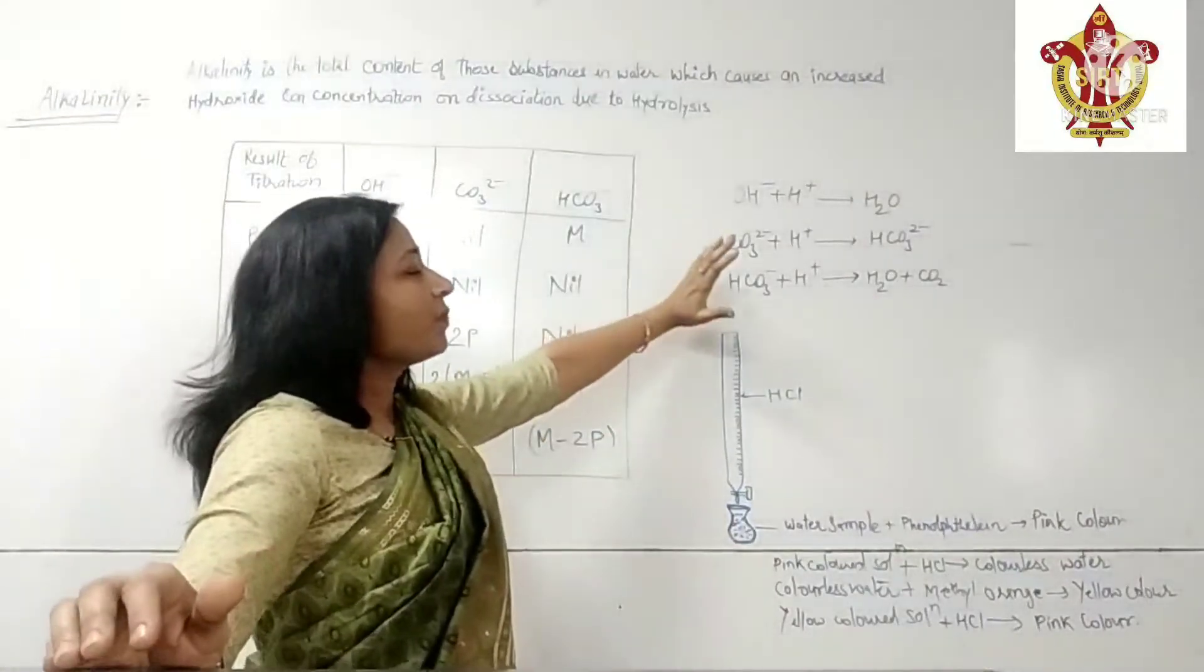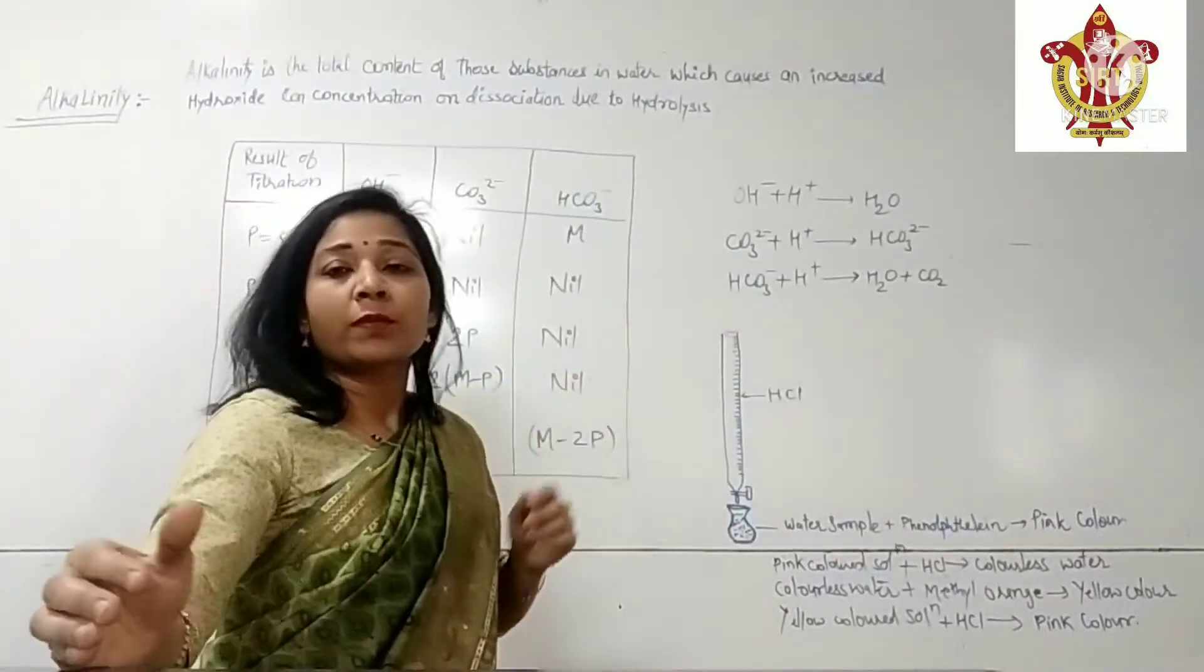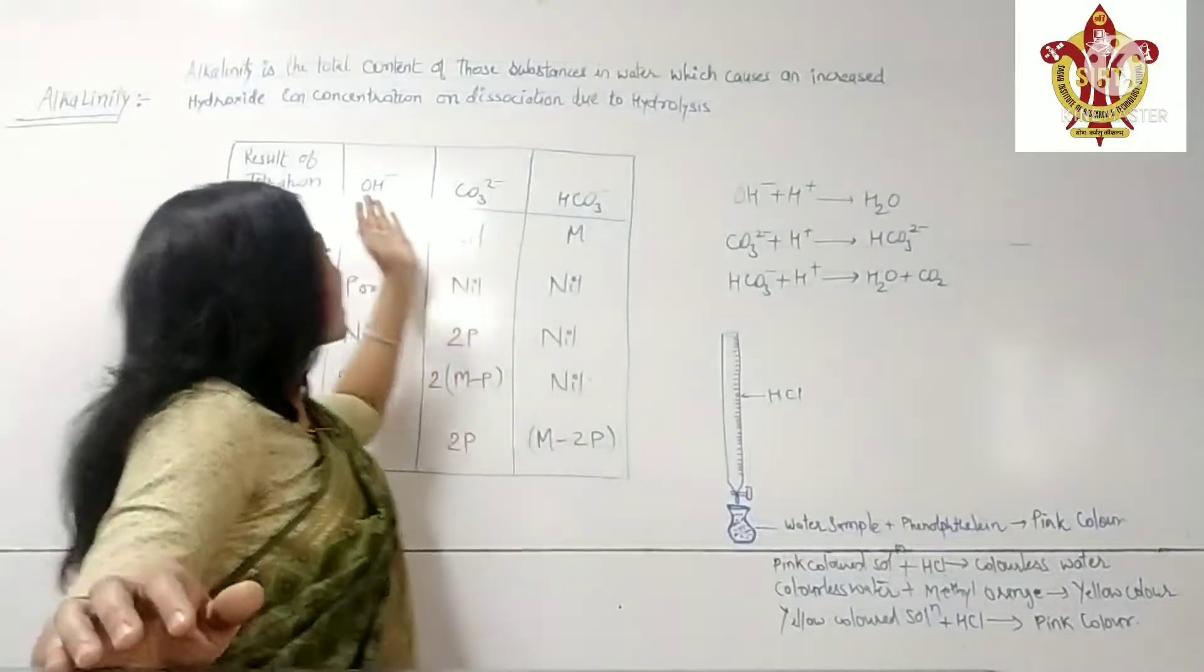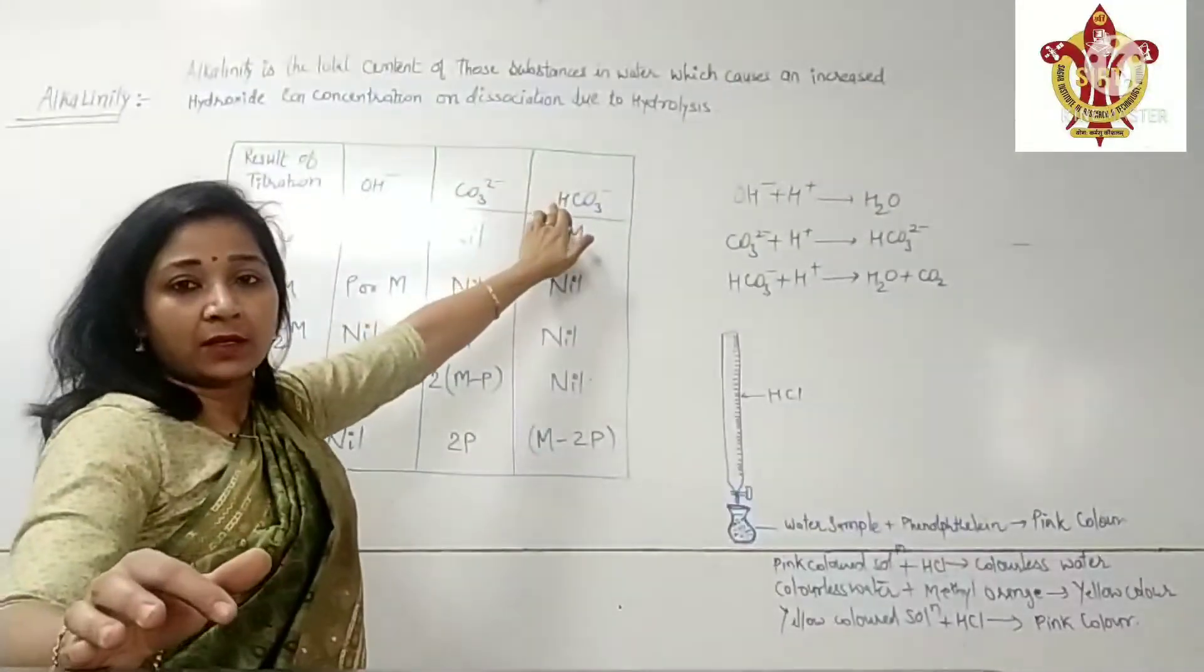Here we see that in the water alkalinity, mainly three ions present. These three ions are hydroxide ion, carbonate ion, and bicarbonate ion.